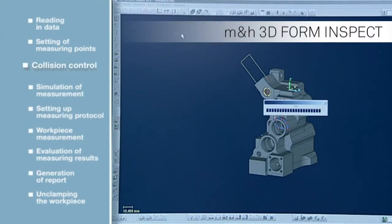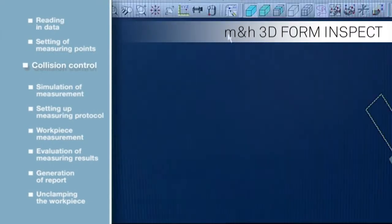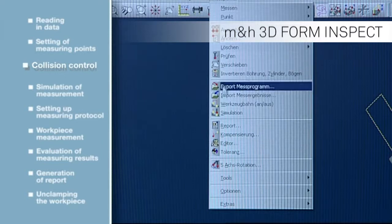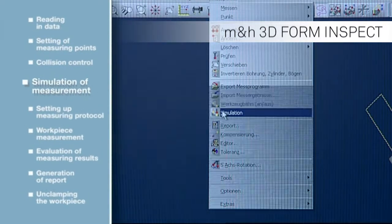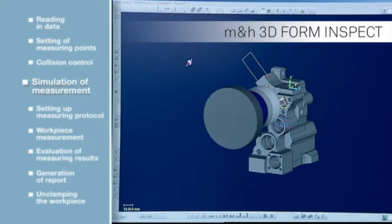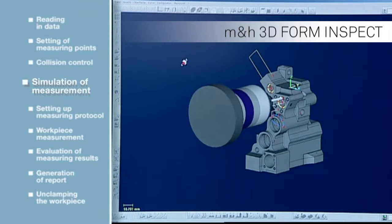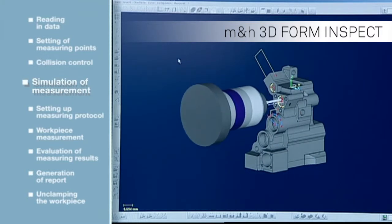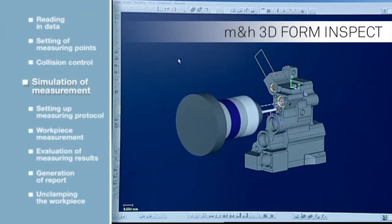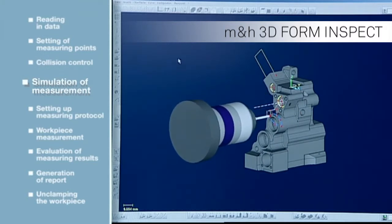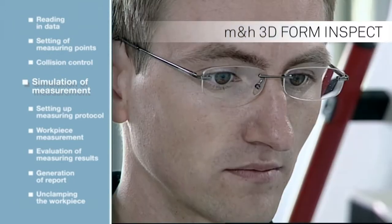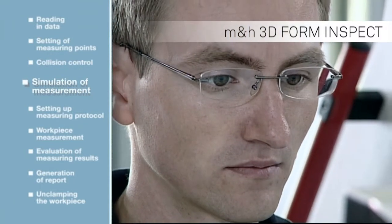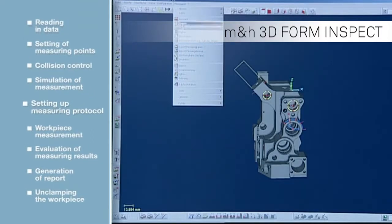Automatic collision control ensures safety and a collision-free measuring program. First, the measurement is simulated, so travel strokes and process sequence can be evaluated much more easily and accurately. The measuring program is created by mouse click.